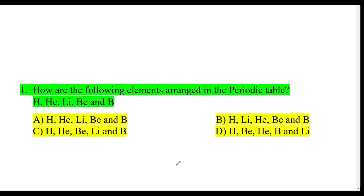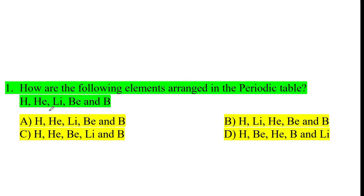Welcome to Muppadai Depends Academy. We will talk about 30 questions. The first question: the periodic table has 5 elements — hydrogen, lithium, beryllium, boron, helium.